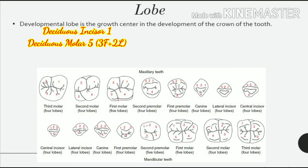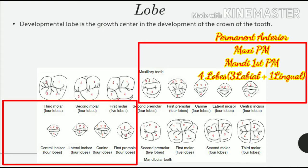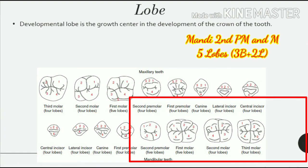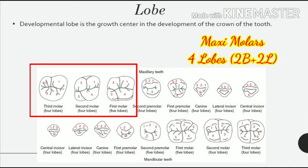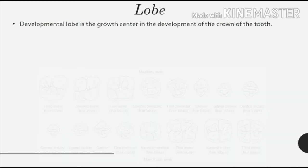Deciduous incisors develop from one lobe and deciduous molars develop from five lobes — three facial and two lingual. Permanent anterior teeth, maxillary premolars, and mandibular first premolars develop from four lobes — three labial and one lingual. Permanent mandibular second premolars and permanent mandibular molars develop from five lobes — three buccal and two lingual. Permanent maxillary molars develop from four lobes — two buccal and two lingual.